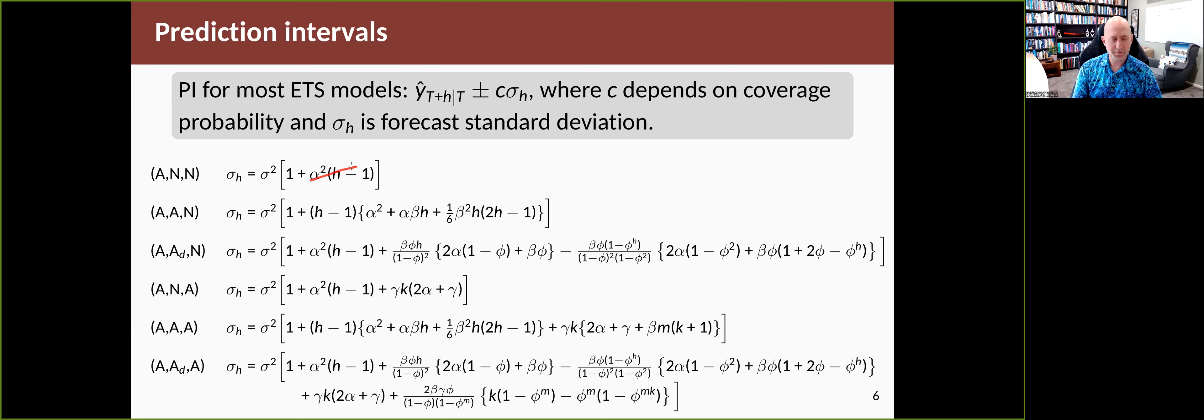Otherwise, you add in a multiple of alpha squared for each of the future horizons. When you've got some trend and additive error, you can derive with a bit of effort the expression for the variance. Notice that if h equals one, one step ahead, that whole thing disappears and you've got sigma squared again. In fact, that's true for all of the equations on this slide.